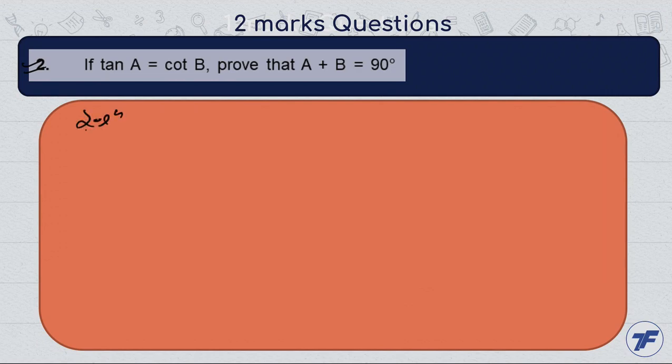So, we have tan A is equal to cot B, and we need to prove A plus B is equal to 90 degrees.